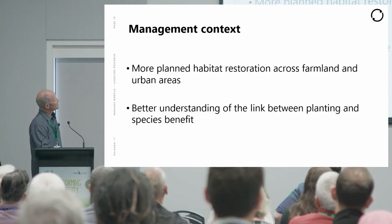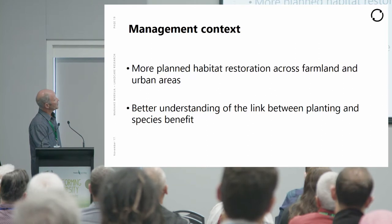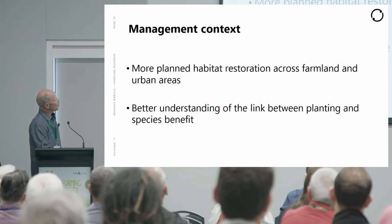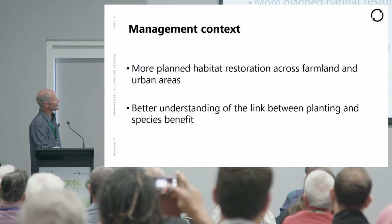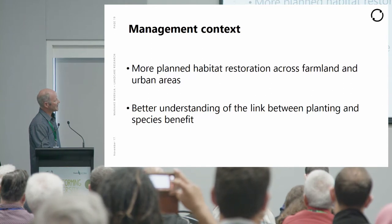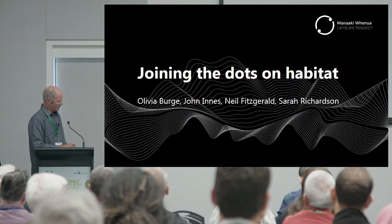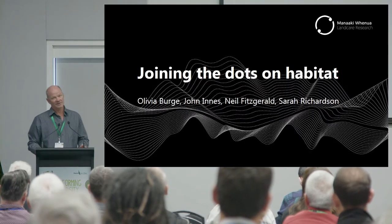A key recommendation — flagged specifically by Campbell — is that we need more planned habitat restoration across farmland and urban areas, and a better understanding of the link between planting and species benefit. That's exactly what this research is addressing.